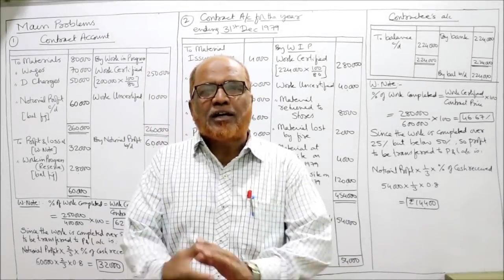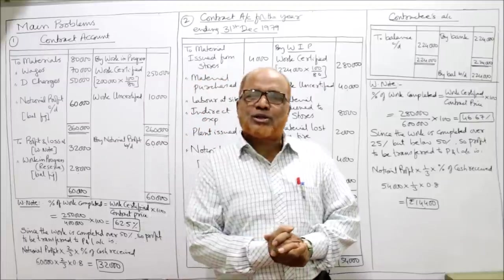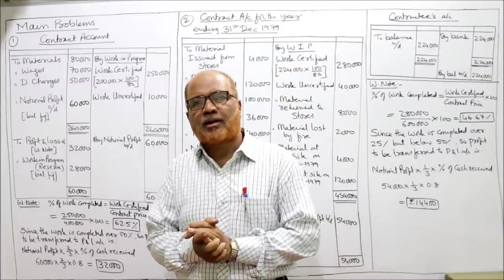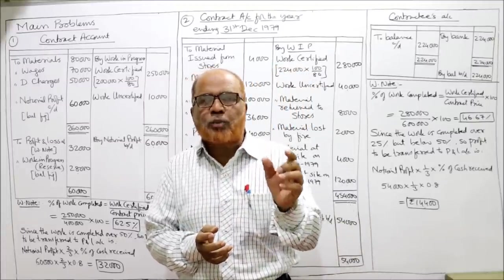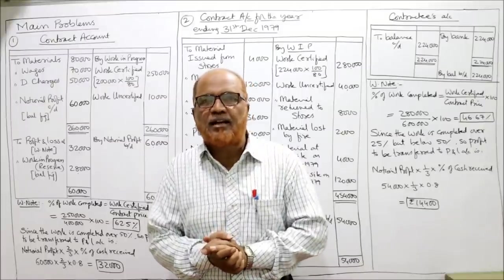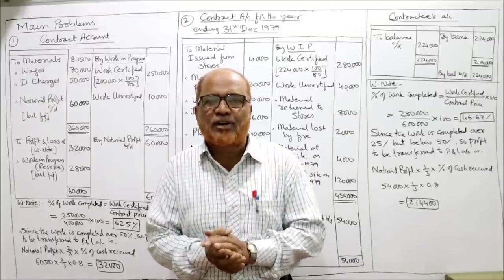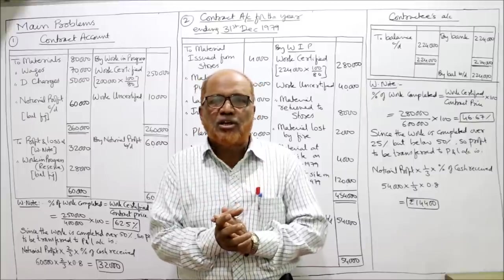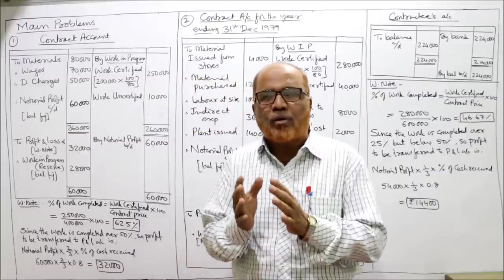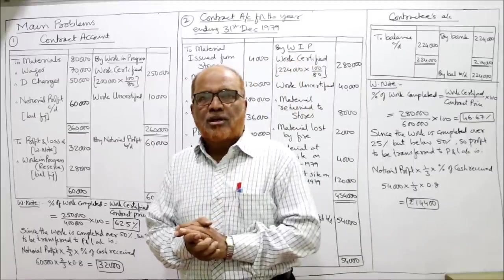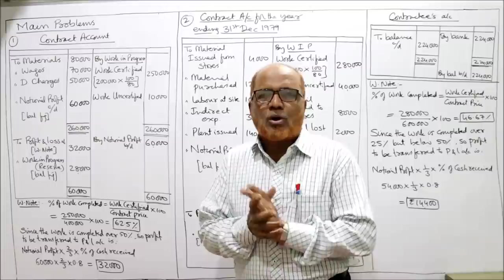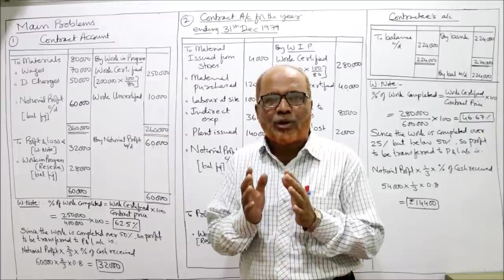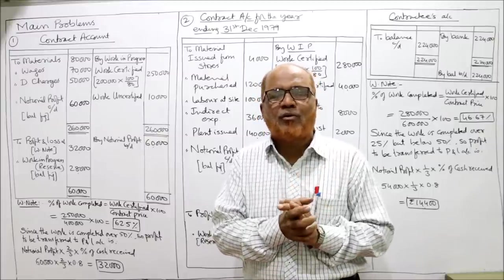Hello students, we'll start the main problems on contract costing. We have already covered the short problems on contract costing, and those short problems are concerned with calculating the profit to be transferred to the profit and loss account. Those calculations we have seen in short questions. Now we are going to start the main problems.